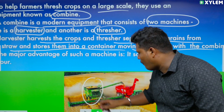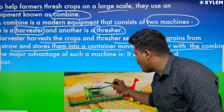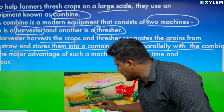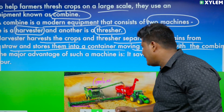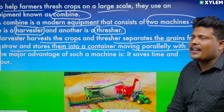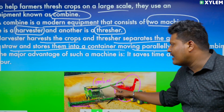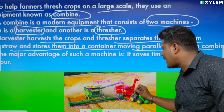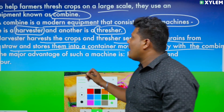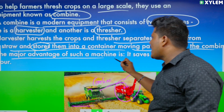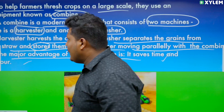This is our combine — where harvesting is done and you can see threshing is done. Grains are separated. And you can see another bin or another vehicle moving parallely to the combine where you can store it. The major advantage of such a machine is it saves time and labor.